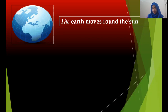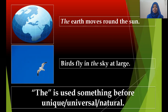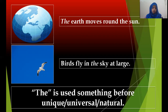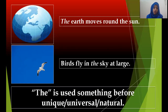'The earth moves around the sun.' 'Birds fly in the sky.' Here 'the' is used before something unique, universal, or natural. We know the earth is unique, the sun is unique, the sky is unique — there is only one of each. So we use 'the' before something that is unique, natural, or universal.